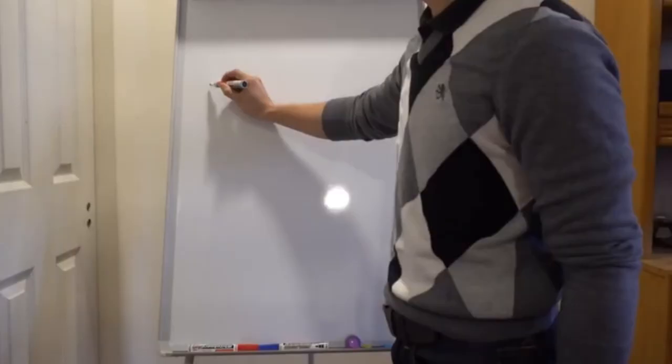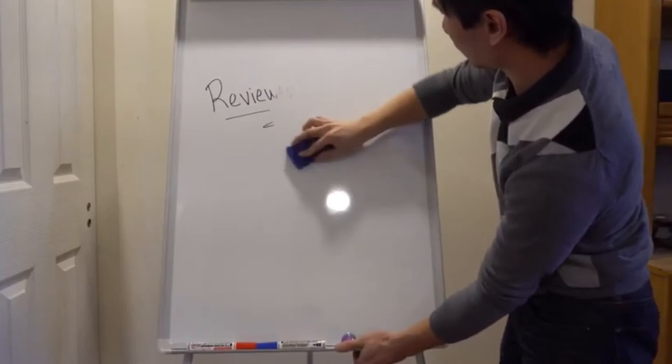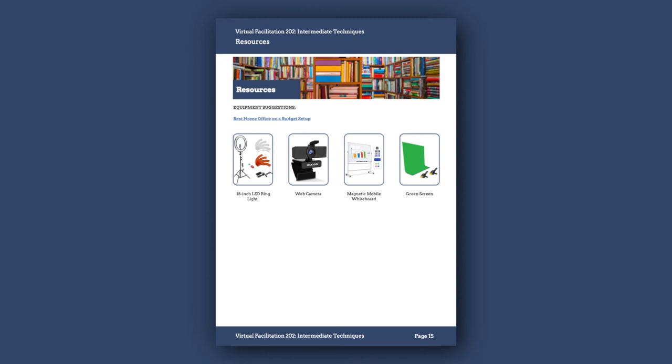Another upgrade you might consider would be either a wall-mounted whiteboard or a movable tripod that you can place behind you so that it's clearly visible on camera. This will give you another option for capturing notes, creating visuals, or just posting a welcome sign at the beginning of the meeting. There are links on page 15 of the workbook for some of the various equipment you might want to invest in so that you can be at your best when you facilitate.